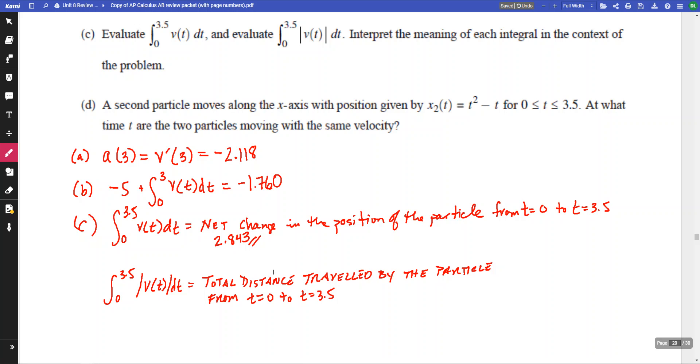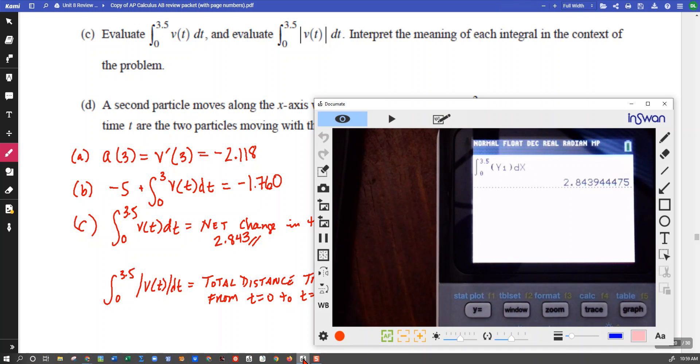And for the absolute value, we can come in and do our work with the absolute value. And so we're going to say our integral, once again, from 0 to 3.5. But now we're going to use our absolute value. Math, arrow over, absolute value. Our velocity function. Make sure we remember our variable. And that gives us, as it calculates, 3.737.